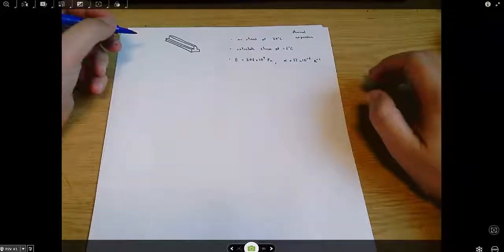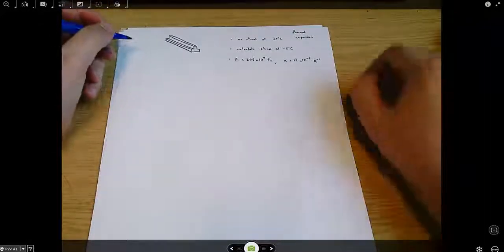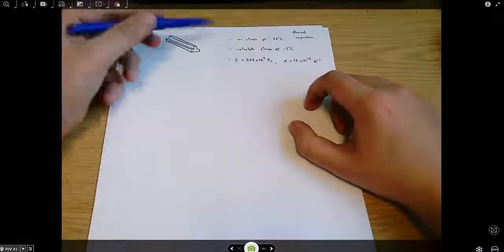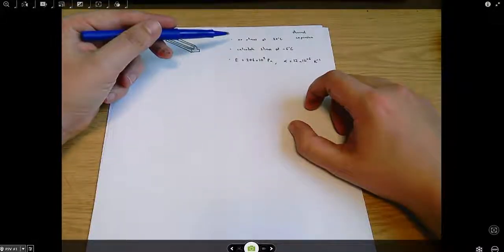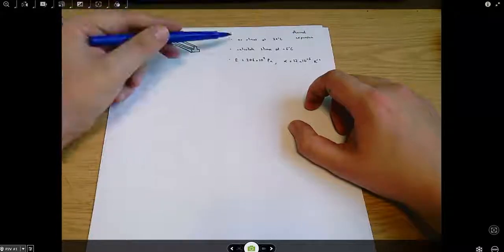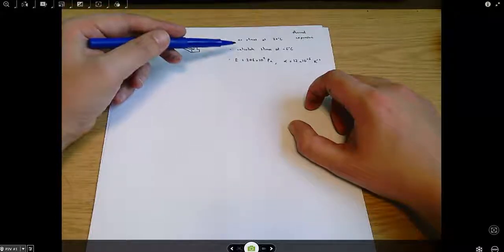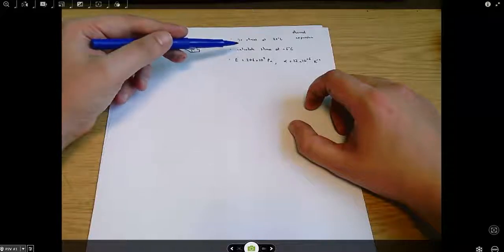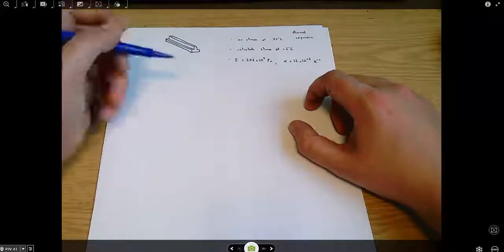This is a question about thermal expansion. We've got a railway sleeper which starts with no stress at 20 degrees C, sorry it's a railway line or a rail, no stress at 20 degrees C and then the temperature changes to minus 6 degrees C and we're asked to find the stress.